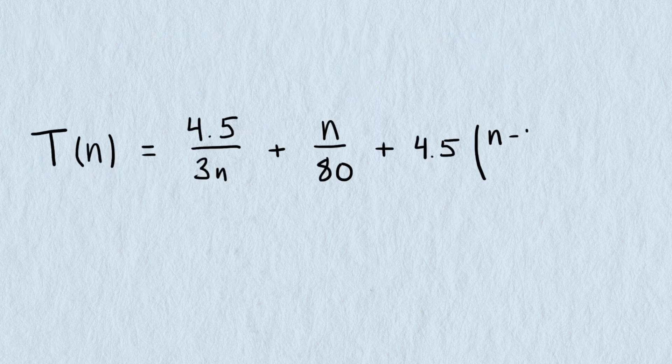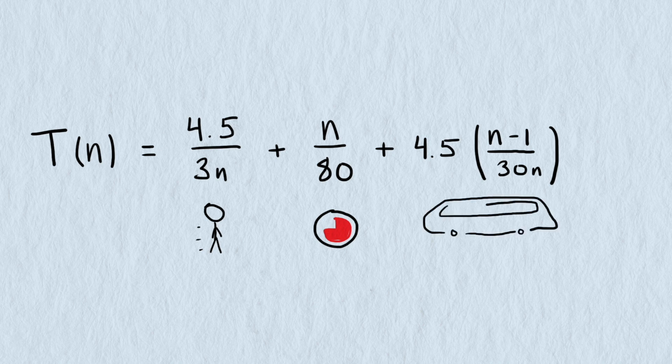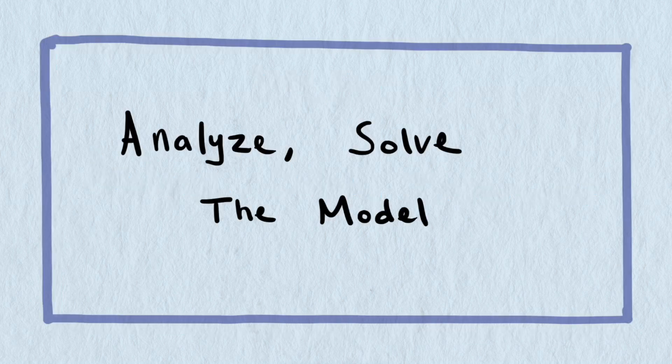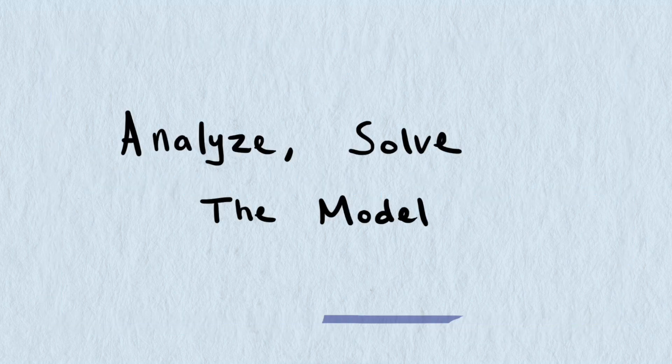Adding all of our times together gives us the total travel time. We will label our function t of n. t for time, n for number of stops. Now we have a model to work with. Analyzing the model, or solving the model, then interpreting it is the fourth step. Remember, we're looking to solve for the number of bus stops that minimizes the total travel time of all passengers.